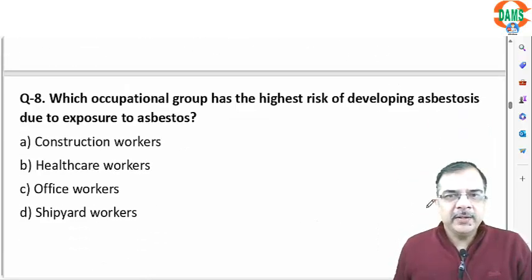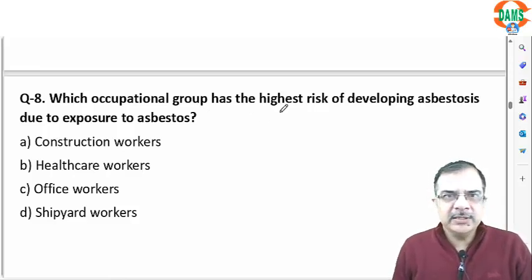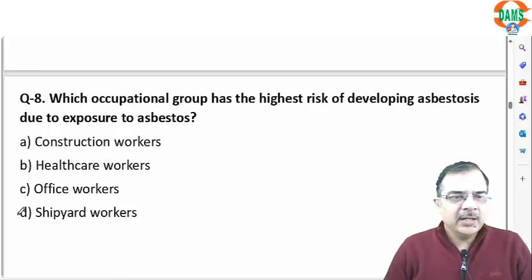Question 8: which occupational group has the highest risk of developing asbestosis? This is a clear-cut answer — shipyard workers.